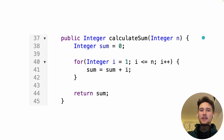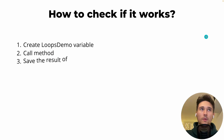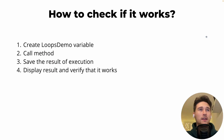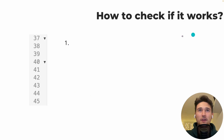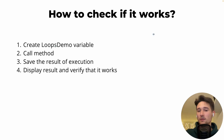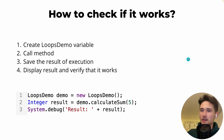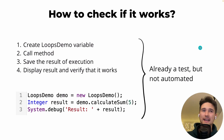If you have no idea about tests, how would you test that this method actually works? You'd go to the Developer Console, create a LoopsDemo variable - that's the class where my method is written - call the method, save the result of execution, and display it. You pass some value, look at the result, and say 'okay, looks good, kind of works.'